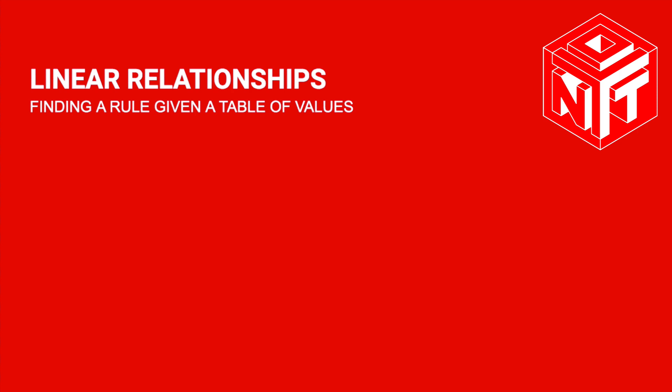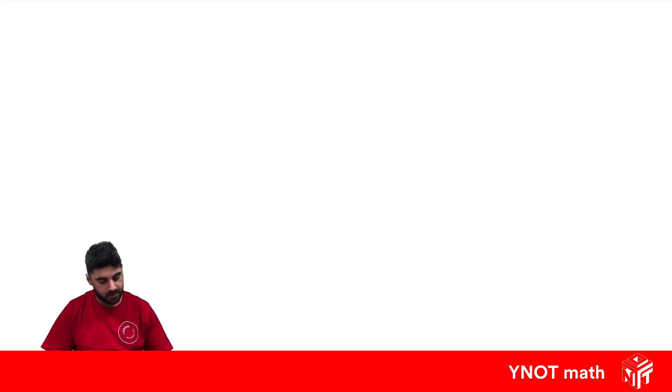Finding a rule given a table of values. So unlike the last video where we had the rule and then we found the table of values, this time we're going in reverse where we have a table of values and we're trying to find the rule. So let's have a look at a table of values.